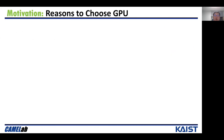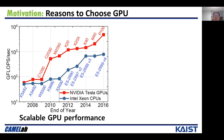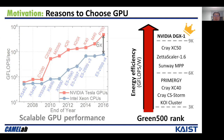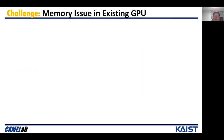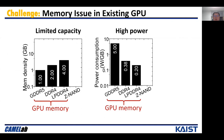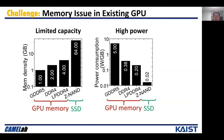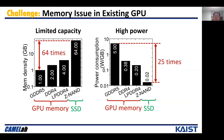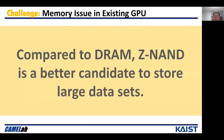We choose GPU because it is a scalable hardware which can integrate thousands of cores. GPU performance has dramatically increased during the past 10 years. By 2016, the performance of GPU exceeded that of the CPU by six times. As GPU employs an SIMT architecture, it also exhibits promising energy efficiency. NVIDIA GPU has proved its energy efficiency in the Green 500 rankings. However, while GPU computing power is increasing, memory technology lags behind. Memory capacity is not scalable, and memory devices are power-hungry. A single DRAM package has at most 4 gigabytes capacity and consumes up to 5 watts per gigabyte. By comparison, the new storage medium ZNAND can increase memory density by 64 times and reduce power consumption by 25 times. So compared to DRAM, ZNAND is a better candidate to store large datasets.